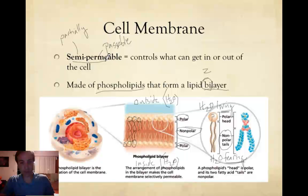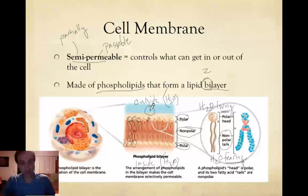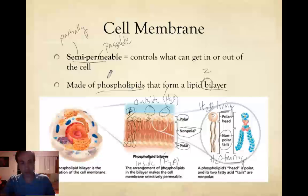This is what creates the semi-permeability. Things that are really big are going to have a hard time getting through, because all of these little phosphate groups are tightly packed, preventing things from passing easily. Also, anything that's polar — anything that has a charge, whether positive or negative — is going to have a hard time getting through this membrane. The polar ends would love to interact with charged things, but you have this really thick, double-thick nonpolar layer in the center. Remember, polar things do not mix well with nonpolar things. So it's semi-permeable because big things and charged things are going to have a hard time getting through — and it's all because of this lipid bilayer arrangement.